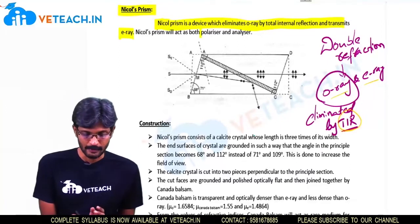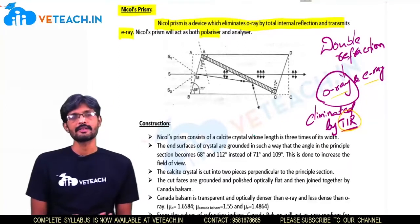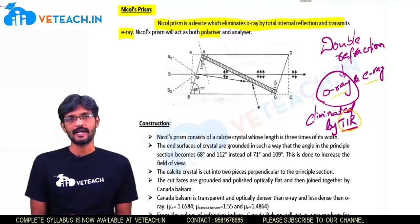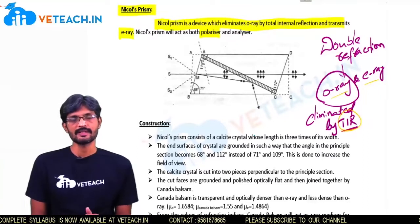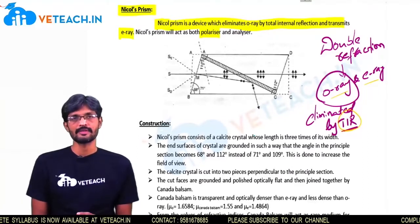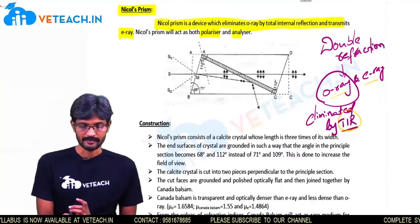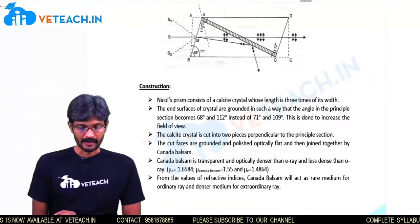The Nicol Prism can act as a polarizer, since it produces polarized light. It can also analyze whether the incoming incident light is unpolarized or polarized light. Now, the construction of the Nicol Prism will be described as follows.